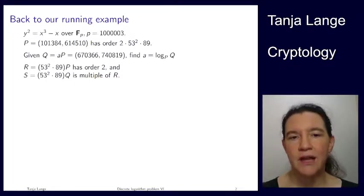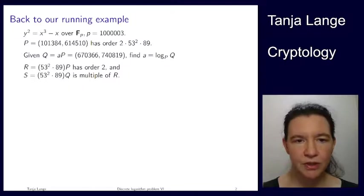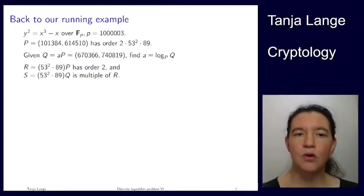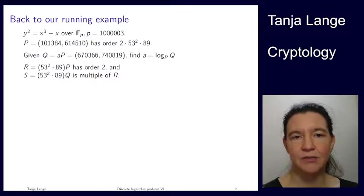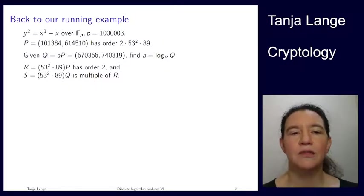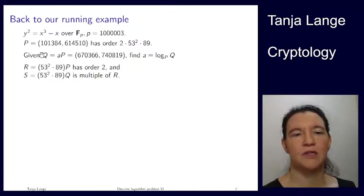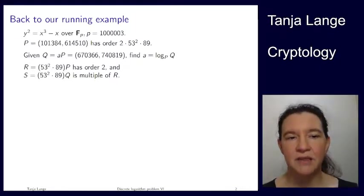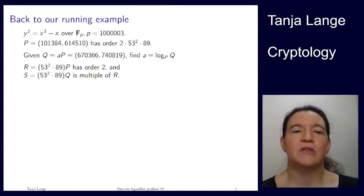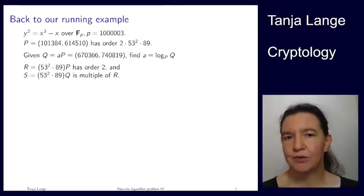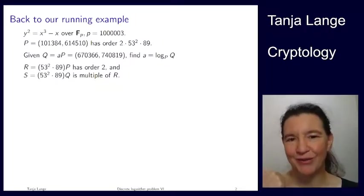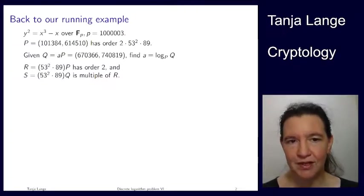And then for the S point, I'm doing the same, but I'm using Q instead of P. Now, Q is a multiple of P. That's exactly this discrete log equation here. And so, if we're taking multiples on both sides, we're taking 53² × 89 here and 53² × 89 on the P side, then this S is again a multiple of R. This might not be having order 2, because order 2 is pretty small, so you could have order 1 or order 2. It can have a factor of 2 in its order.